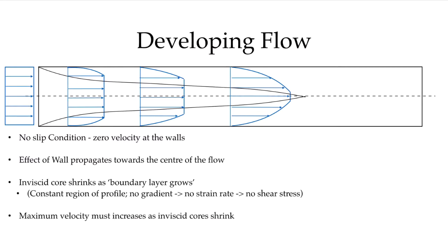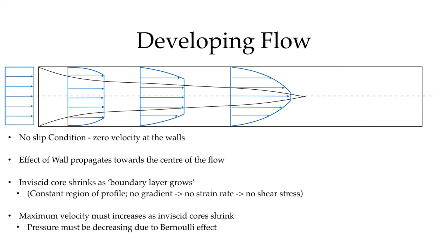If we think about conservation of mass, we can see that this section of the profile has much smaller velocities than the original constant value, so there is less mass flow in this part of the profile. Of course mass is conserved, so the same amount of mass must pass through at each point, and therefore the maximum velocity in the inviscid core has to be larger. The velocity of the inviscid core is increasing as we move down the pipe, reaching a maximum at the end of the developing flow region. If we think about Bernoulli, that means the flow in this inviscid core is accelerating, and therefore the pressure must be decreasing as we accelerate that flow.